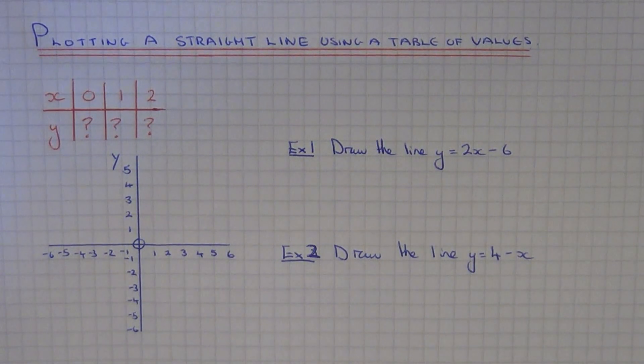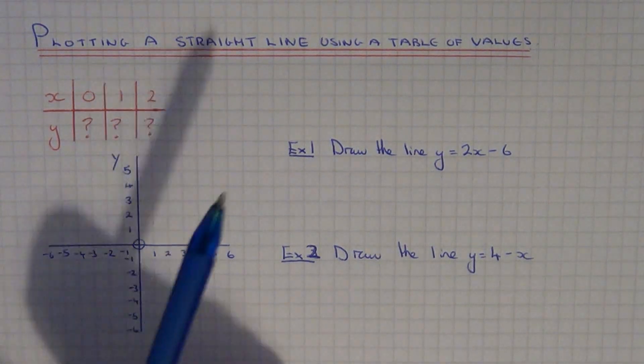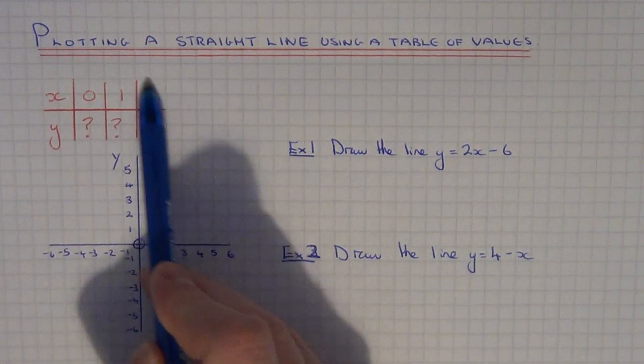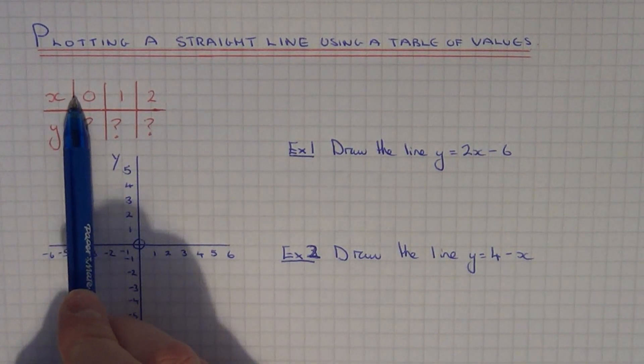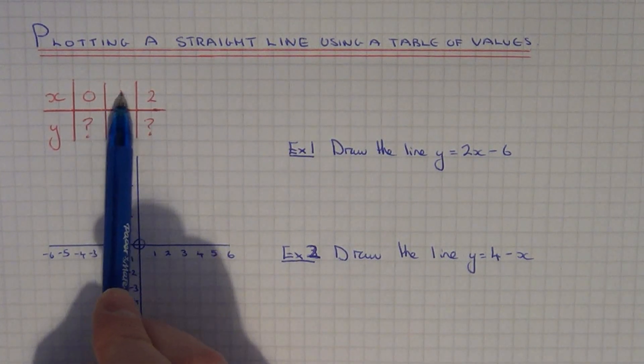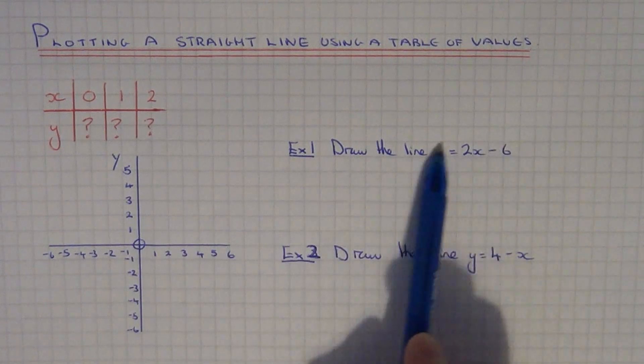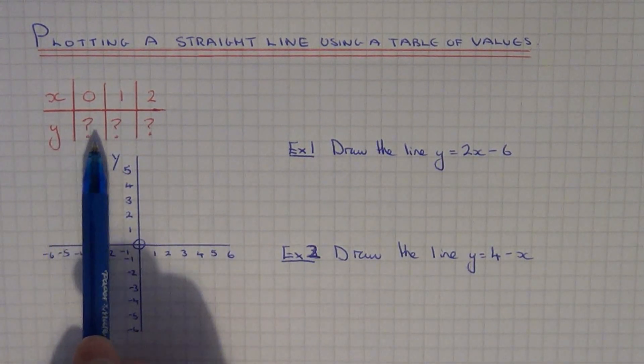Today I'm going to show you how to plot a straight line graph. One of the methods you can use is a table of values. This is where you pick some x-coordinates. I've chosen 0, 1, and 2, and what you do is put these values into your equation and you can work out the corresponding y-coordinates.